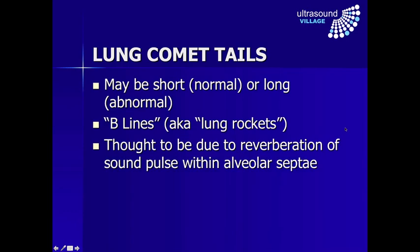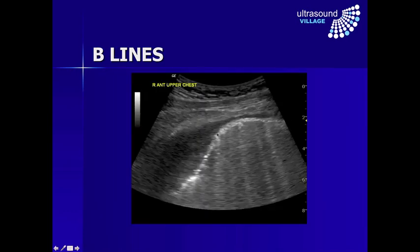In lung ultrasound, comet tail artifacts may be short — very similar to those in the gallbladder — and are quite normal with no significance. Or they may be long, going through the entire depth of the screen, in which case they are referred to as B-lines, also sometimes known as lung rockets. In lung, this is thought to be due to reverberation of the sound pulse within the alveolar septa. Here is an example from a lung — this is the pleural surface right up near the top of the chest, and here we have these reverberation artifacts running down all the way to the edge of the screen.